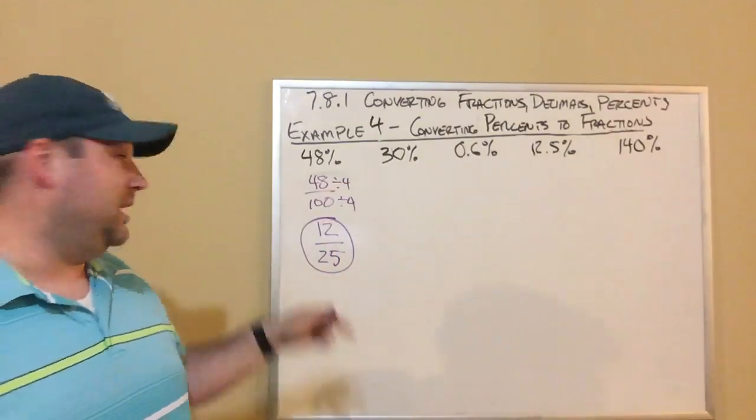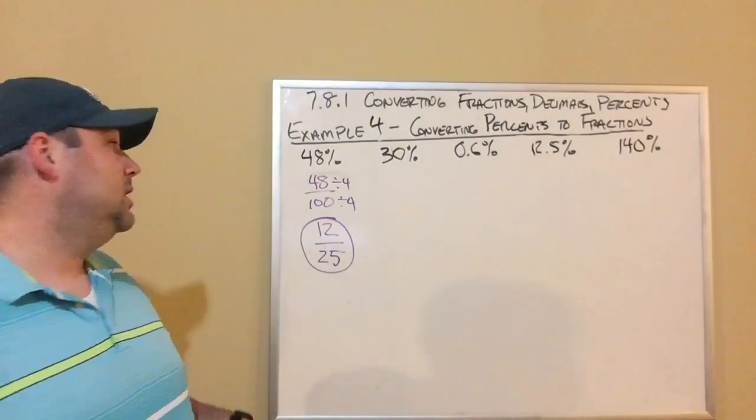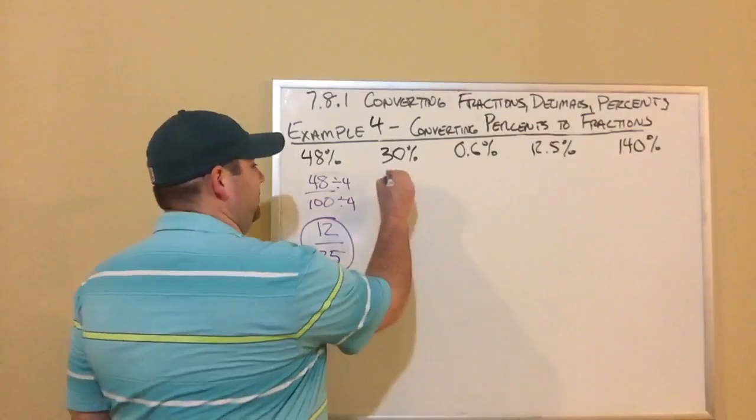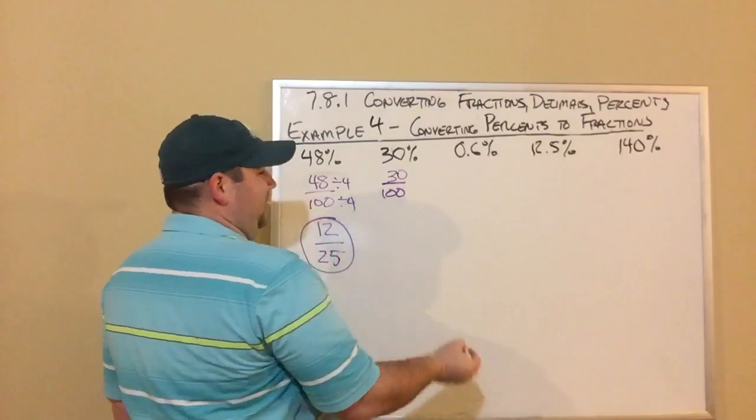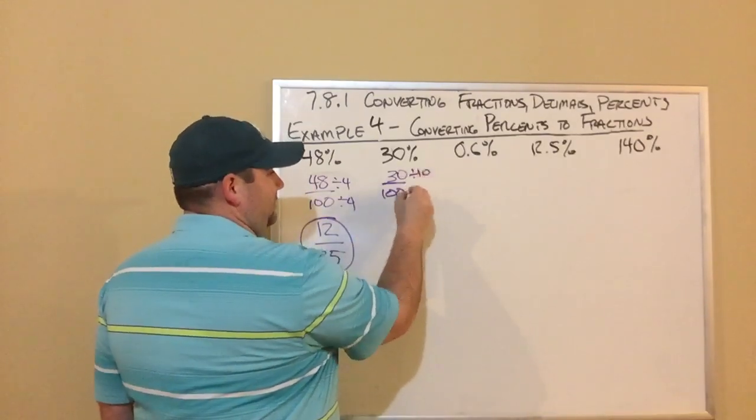So let's look at 30%. I'm going to take that, I'm going to put it over 100, so 30 over 100. I could divide by 10, divide by 10, and I end up with 3/10. 30 percent is 3/10.